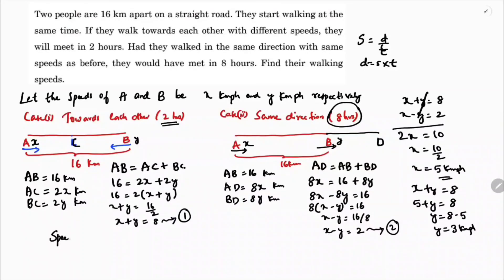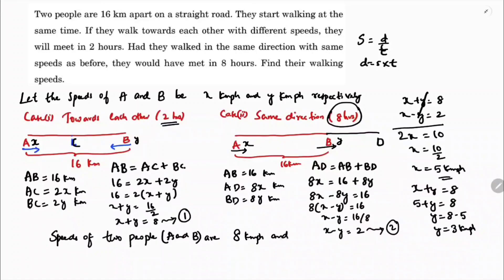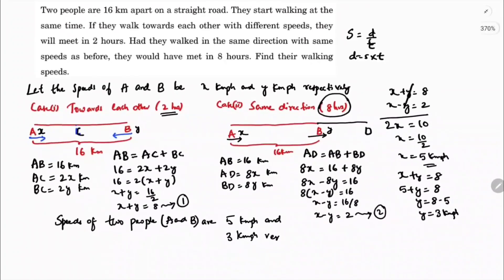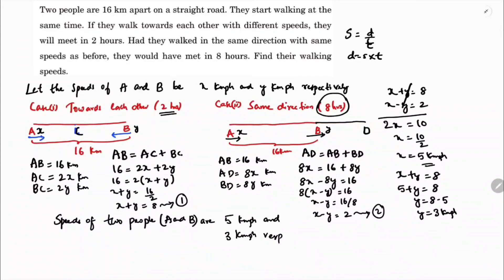So the speeds of the two people A and B are 5 kilometers per hour and 3 kilometers per hour respectively. The first person is traveling faster.